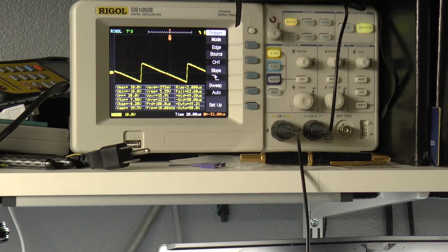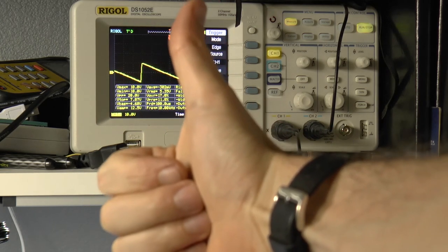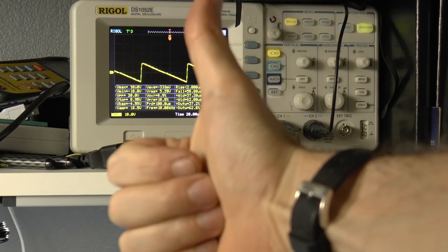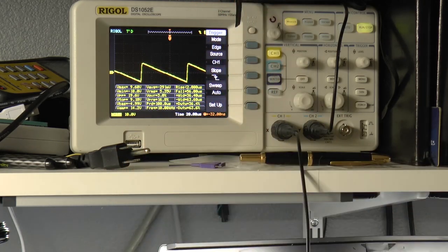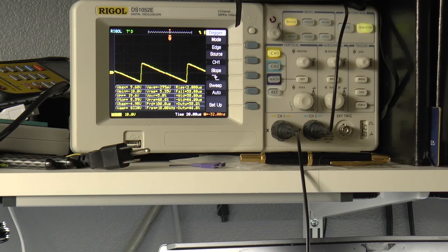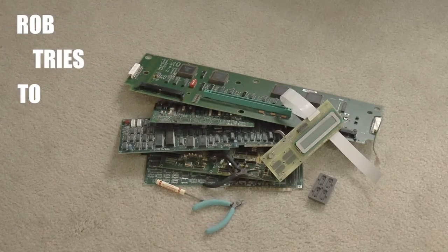We can see that we have sine waves, square waves, triangle waves, all sorts of different triangle waves at approximately the correct frequency and voltage, which is all I really care about at this point. So I think we can count this as a success. Rob tries to fix a thing and succeeds. Excellent! See you next time Rob tries to fix a thing.